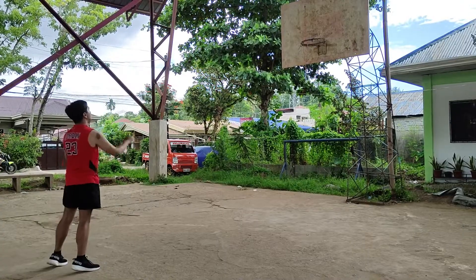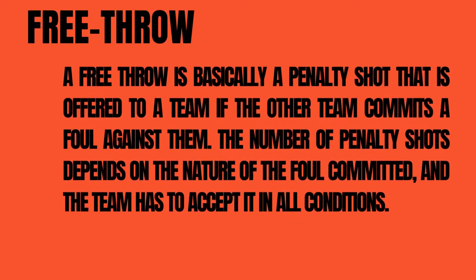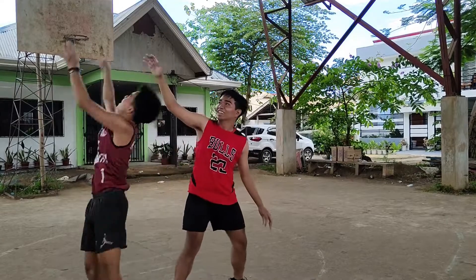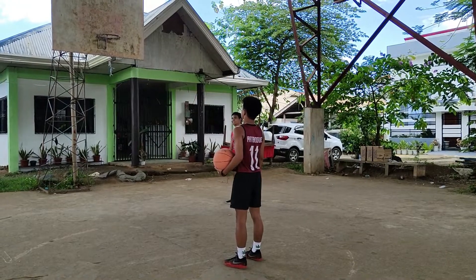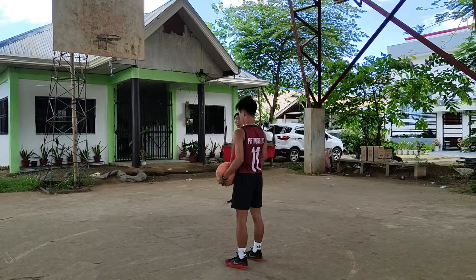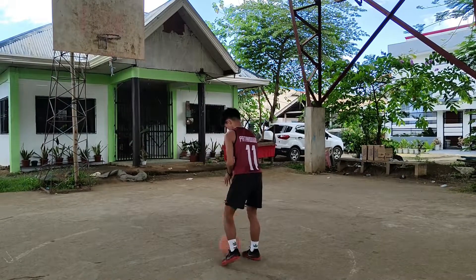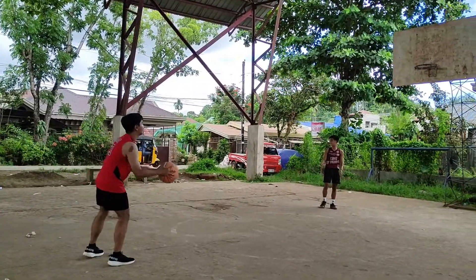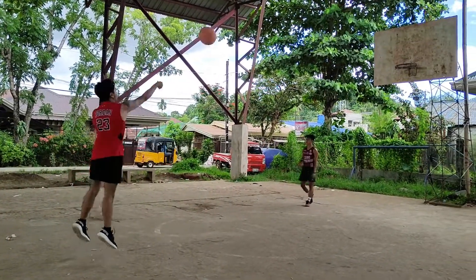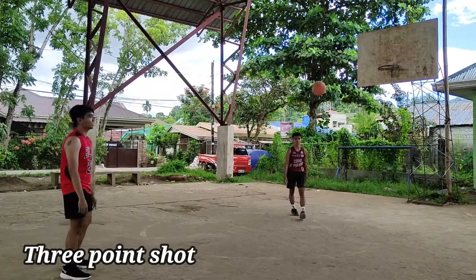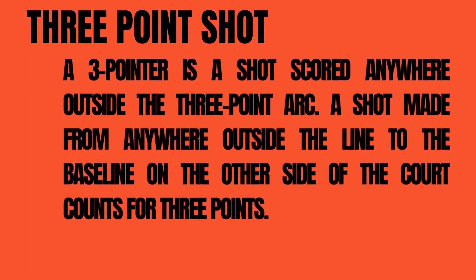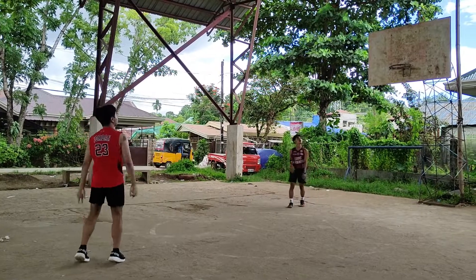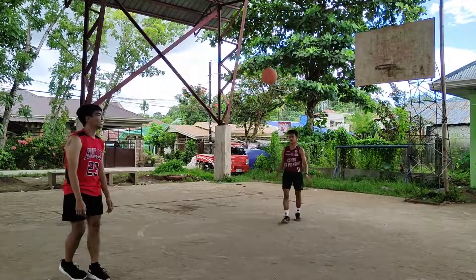The fourth type is a free throw. A free throw is basically a penalty shot that is offered to a team if the other team commits a foul against them. The number of penalty shots depends on the nature of the foul committed. The fifth type is a three-point shot. A three-pointer is a shot scored anywhere outside the three-point arc. A shot made anywhere outside the line to the baseline on the other side of the court counts for three points.